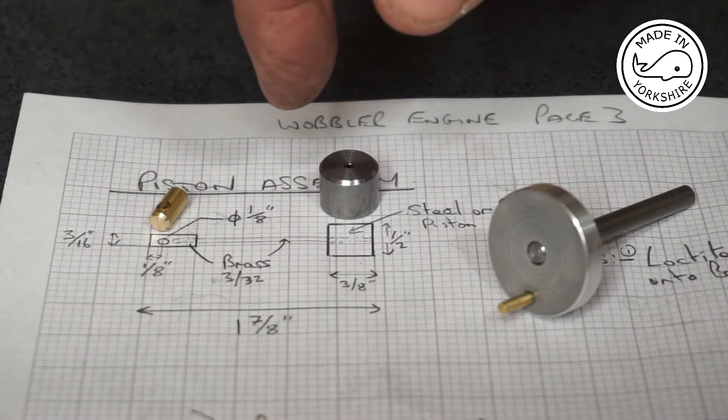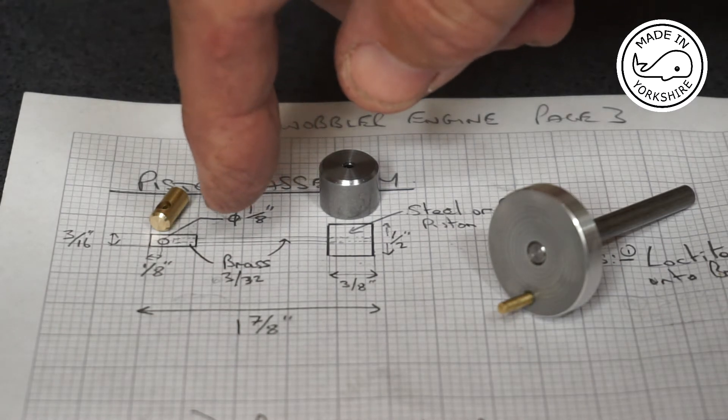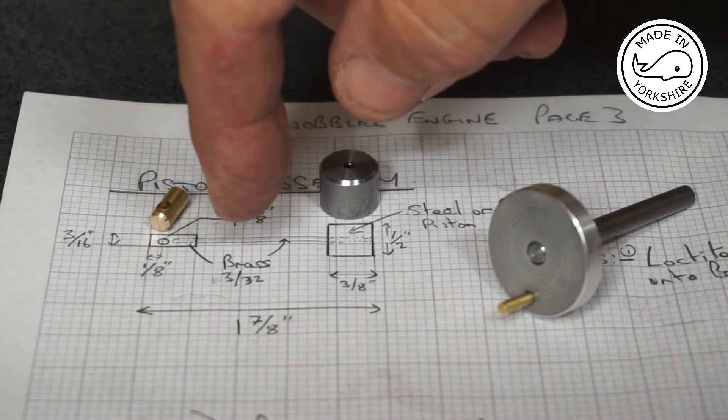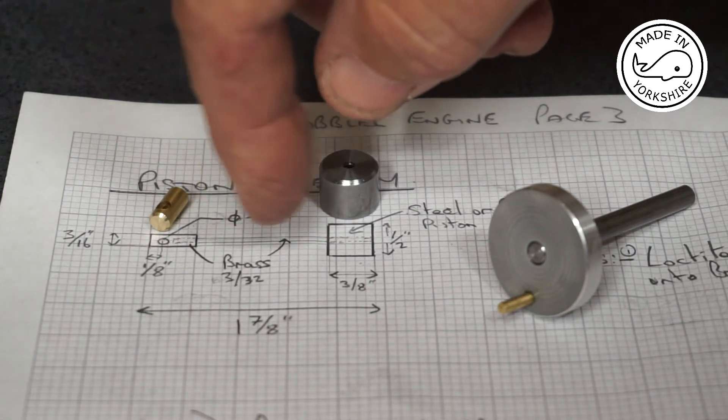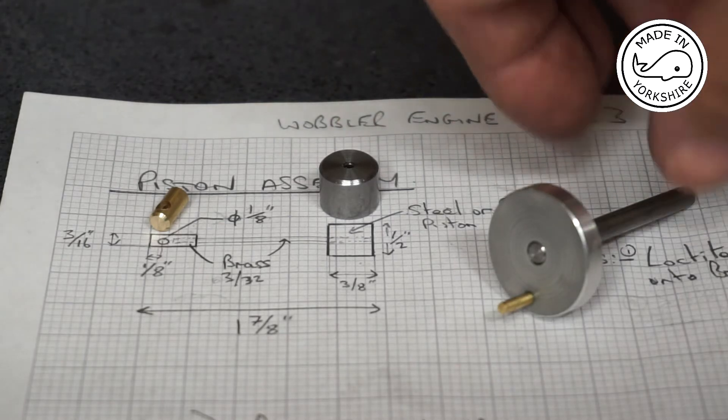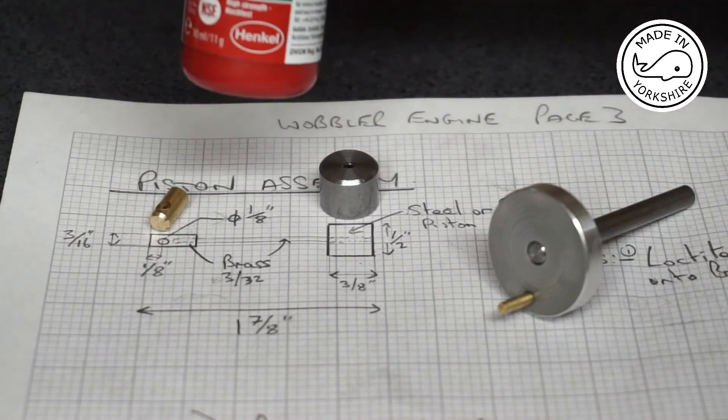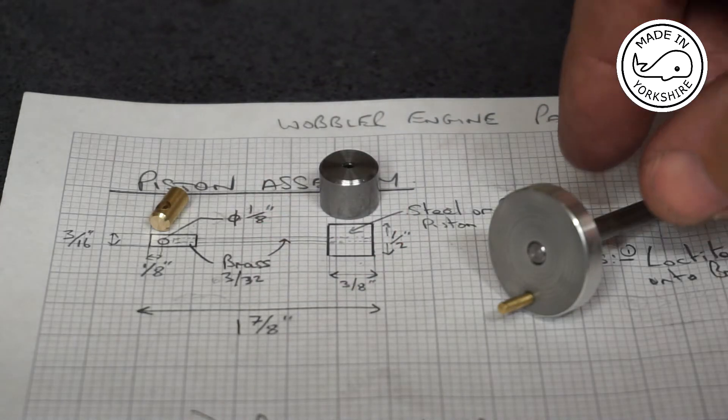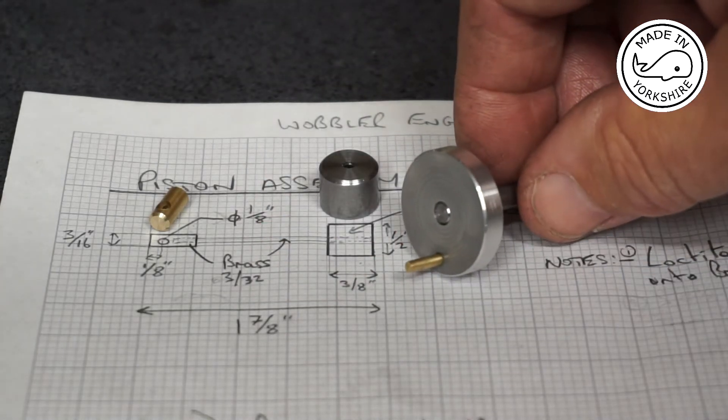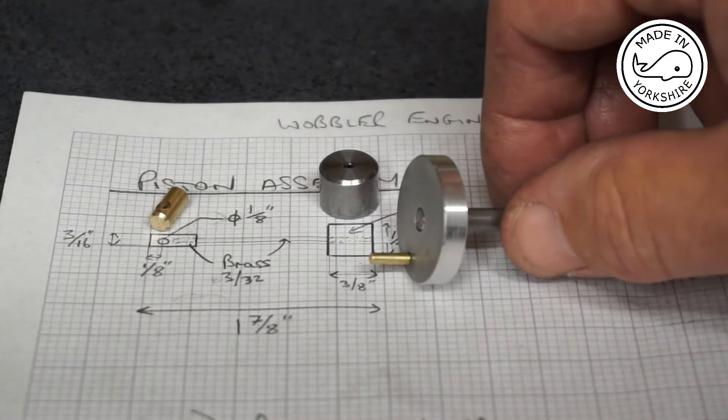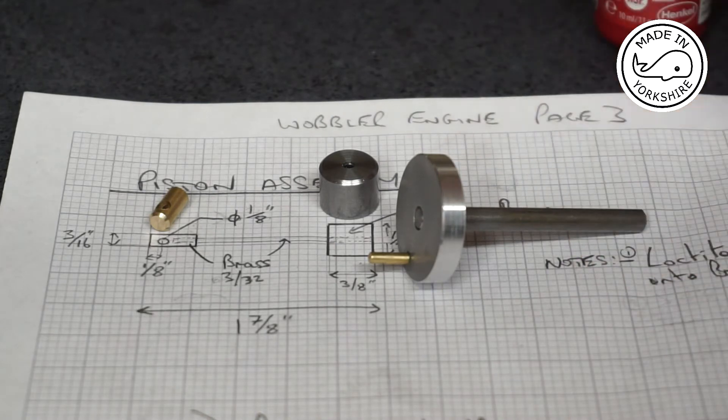All I'm waiting for now is a piece of brass bar 3/32 of an inch in diameter. Also off camera I decided to Loctite this crankshaft, just Loctited that pin in there and the shaft. Amazing that Loctite 638, never used it before but it went off within about four or five minutes, amazing stuff.